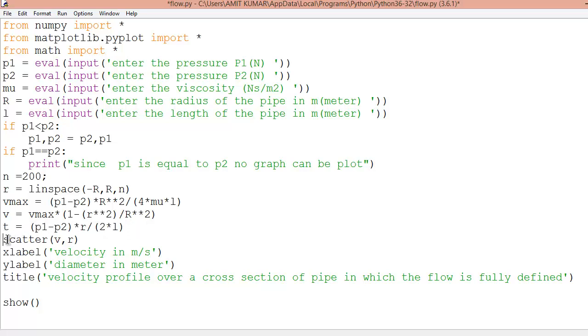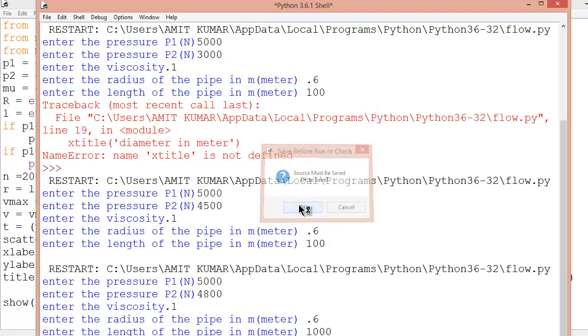T and scatter. Basically I am going to plot a scatter plot. So along X axis I am plotting velocity meter per second. Along Y it is diameter. So let's run the program. Click on run module. Click OK.